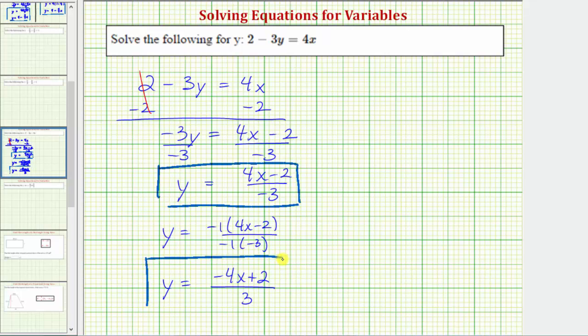Yet another option would be to divide each term in the numerator by 3. So if we have y equals the quantity negative 4x plus 2 divided by 3, we can write this as y equals negative 4x divided by 3 plus 2 divided by 3, or just y equals negative four-thirds x plus two-thirds.